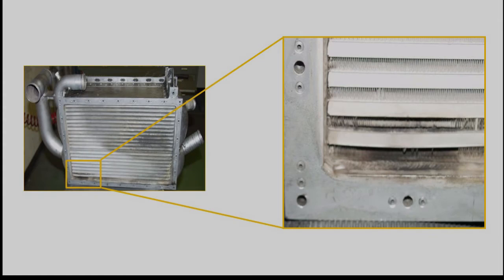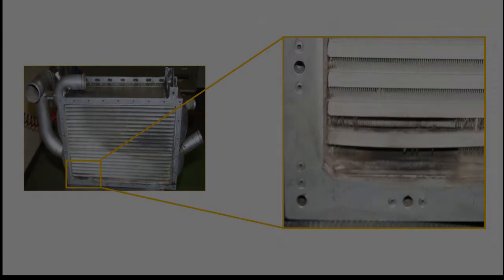Heat exchanger leakage will divert air flow from the turbine, thus reducing ACM speed and decreasing the efficiency of the ECS, ultimately affecting ECS performance. Replacement is the only corrective action for this kind of damage.